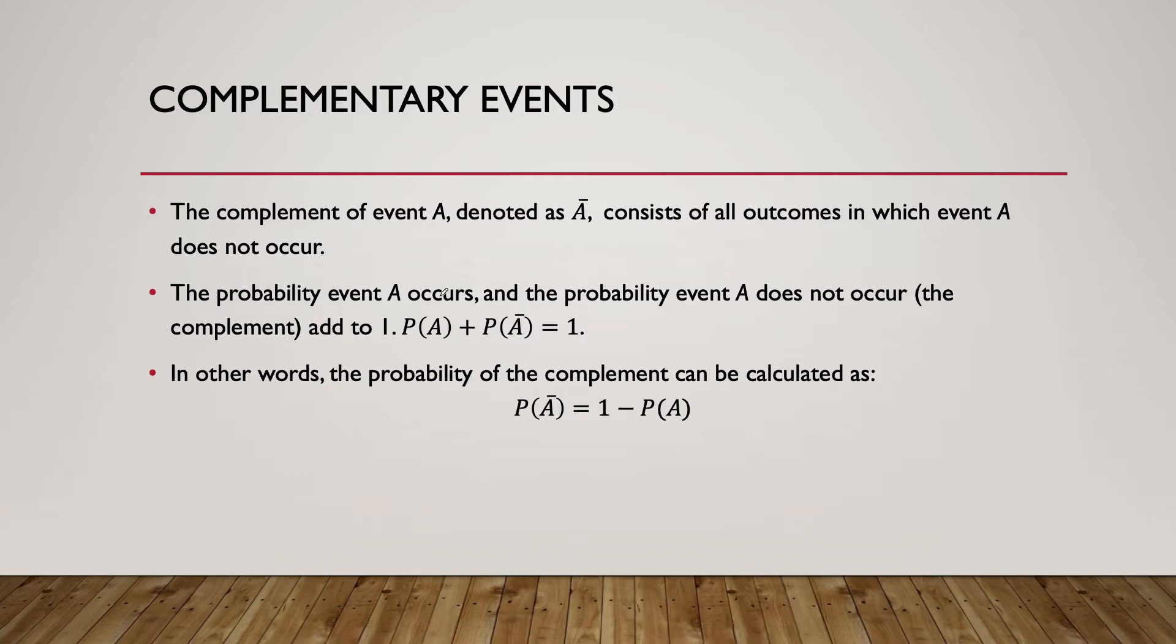Complementary events are where we have the complement of some event, let's call it A. It's denoted as A with a bar on top, A bar, that consists of all outcomes in which event A does not occur. We read this as A complement or complement of A. The probability that event A occurs and the probability that A does not occur add to be one. So probability of A plus probability of A complement equals one. In other words, probability of A complement equals one minus probability of A.